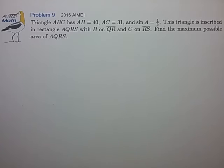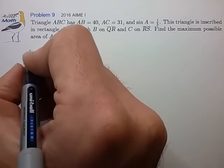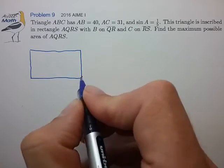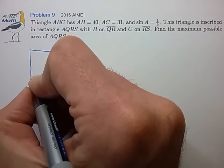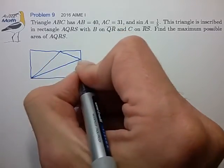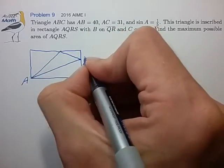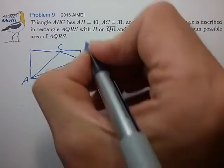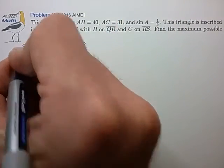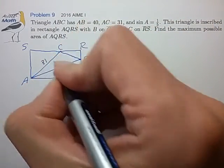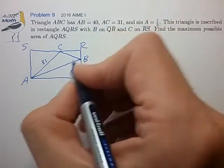So if you sort out that description, you can come up with a figure roughly as shown. We have triangle ABC sitting inside of rectangle AQRS. We're given that AC is of length 31, and AB is of length 40.